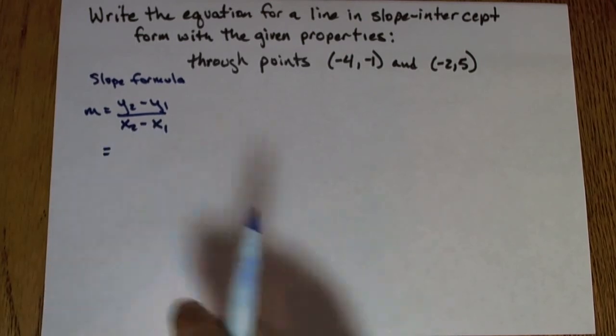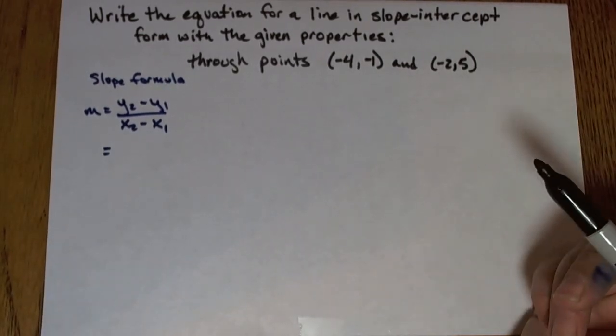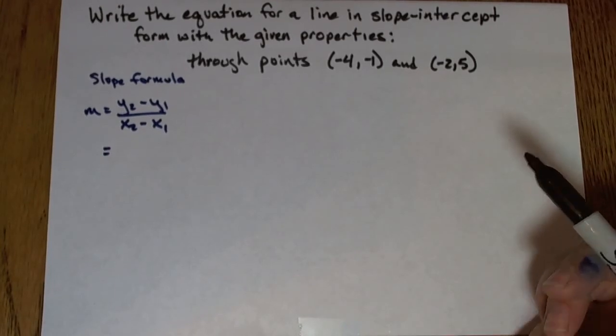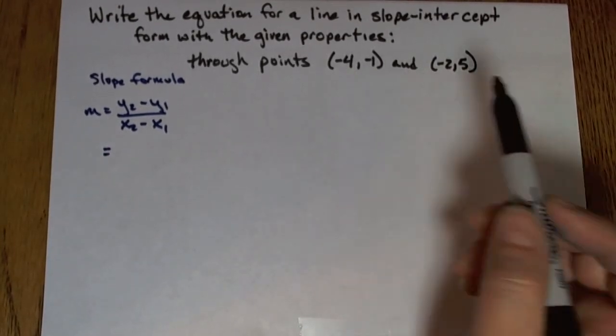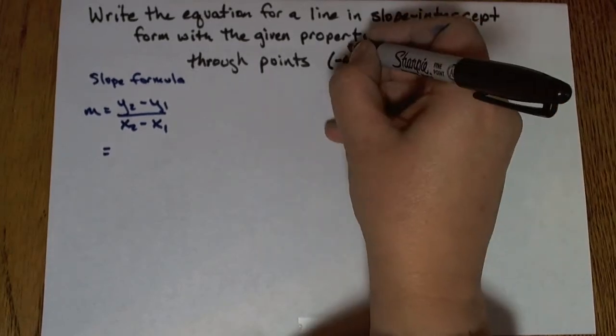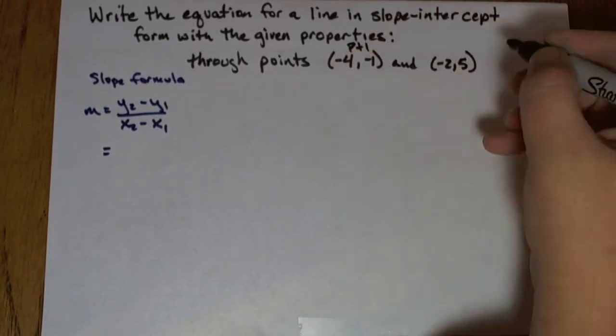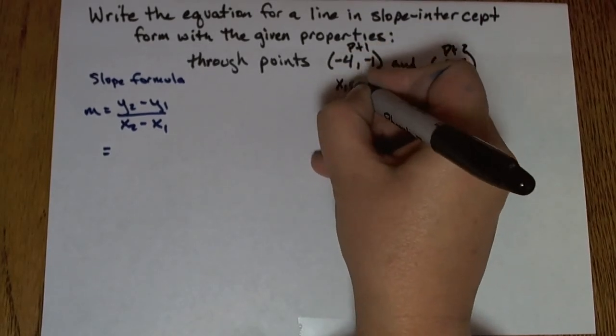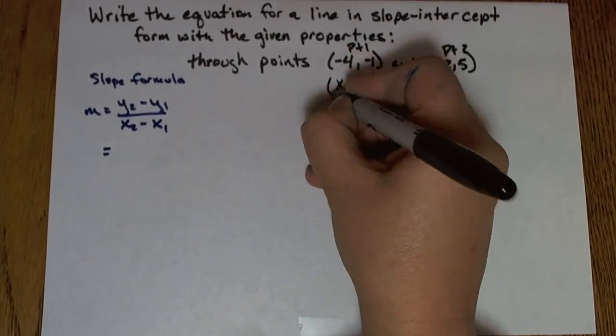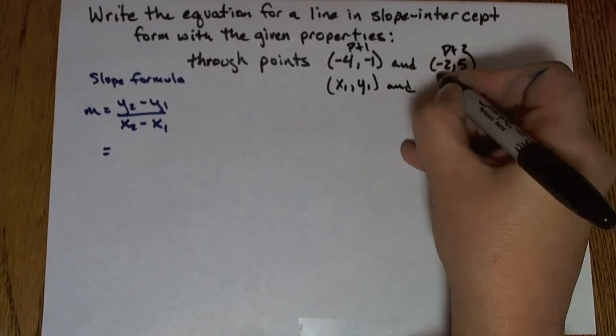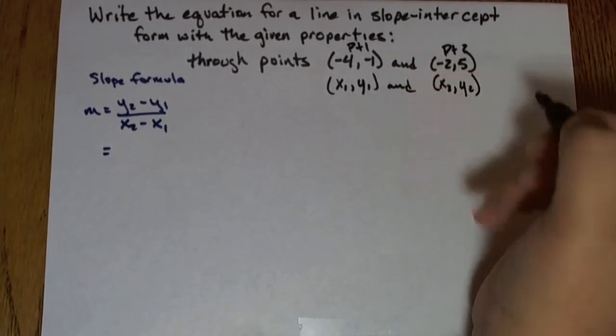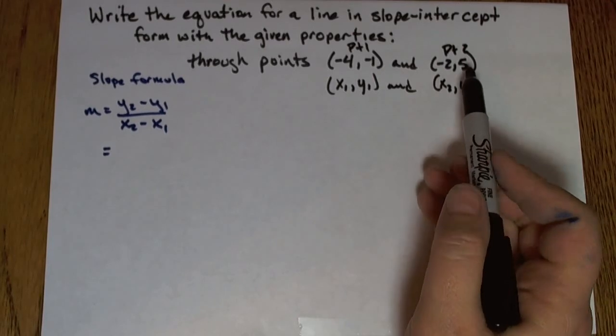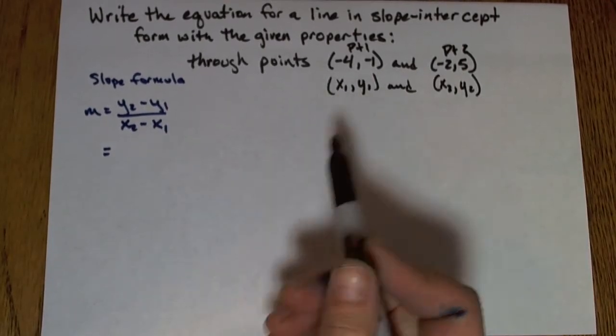So in order to use that slope formula, I need to pick one point as point 1 and the other as point 2. It doesn't matter which I pick as which point. But I'm going to go ahead and pick the first one as point 1 and the second one as point 2. Then I'll have an x1, y1 here and I'll have an x2, y2 here.